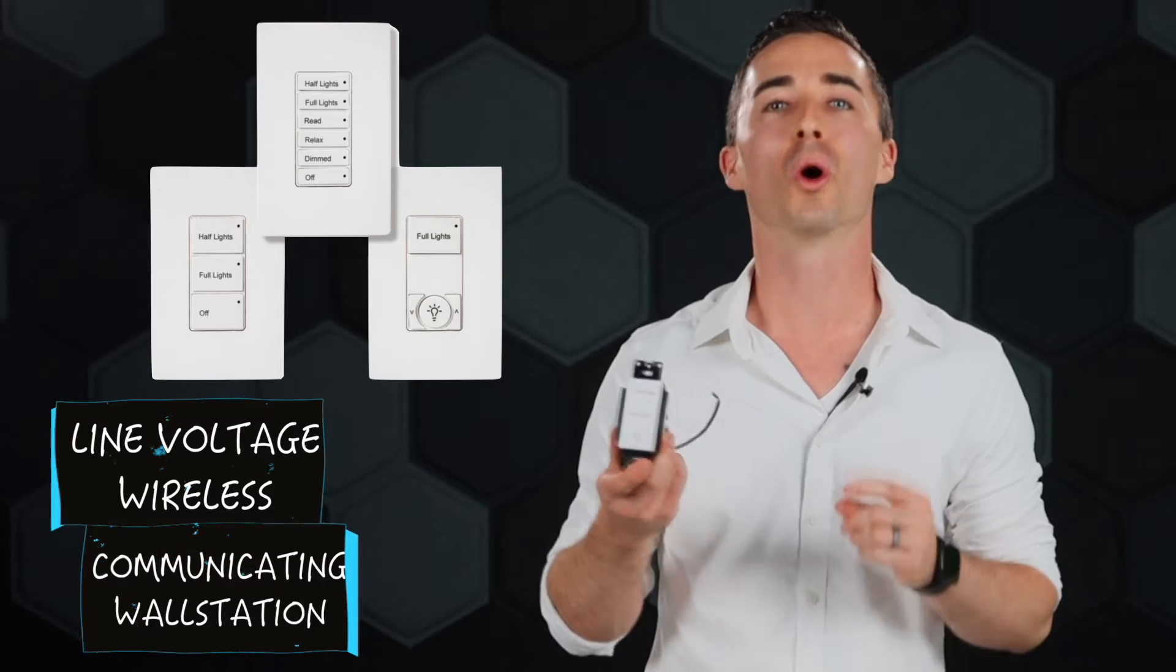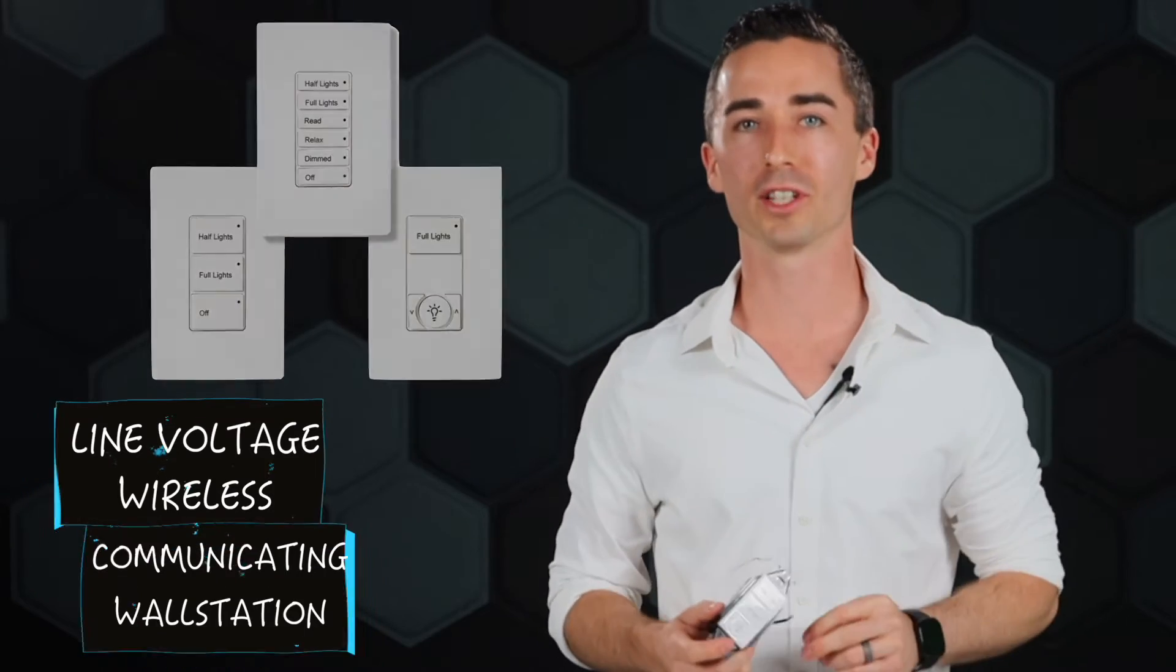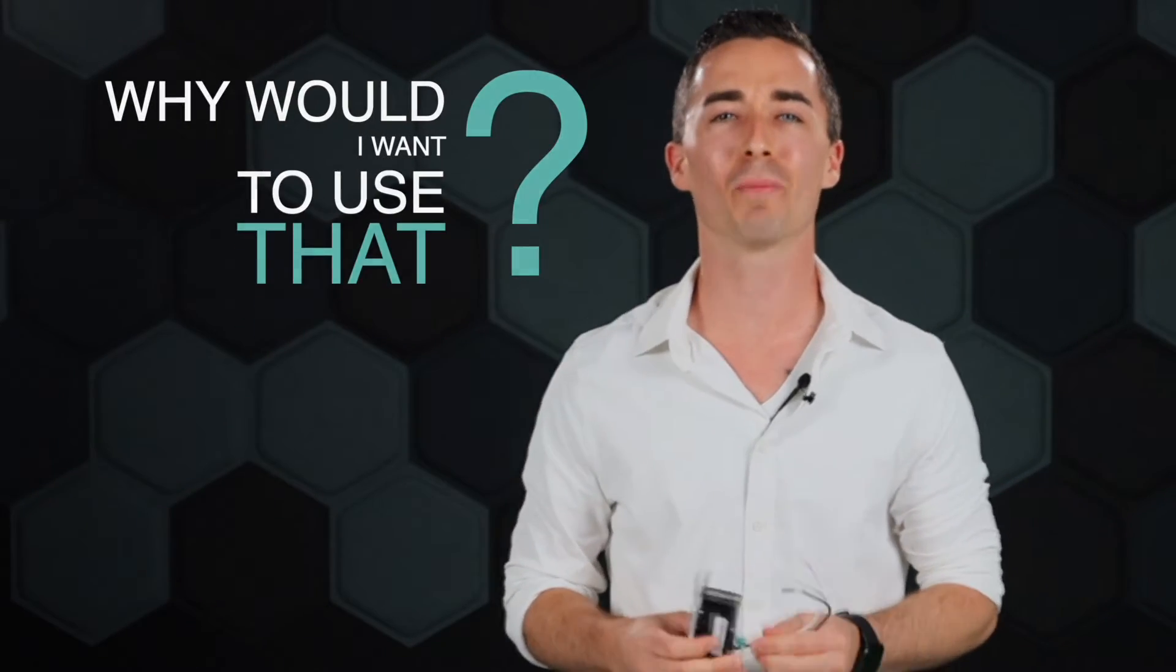Speaking of being a winner, if you really want to be a winner, utilize the line voltage wireless communicating wall station. Why would I want to use that? Well imagine walking into a TI space. You already have line voltage wall stations in place from the previous projects. Why not just install one of these guys?